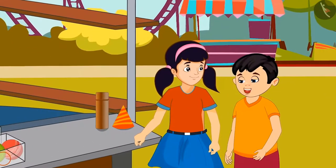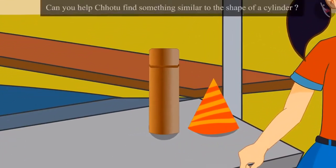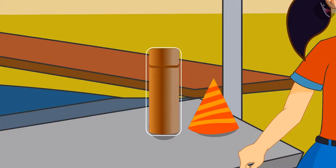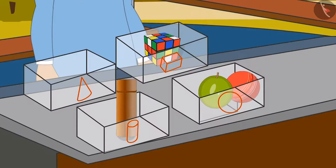And now we have to find something that looks like a cylinder. And I will find this item, Neha. Children, can you help Chotu find something similar to the shape of a cylinder? You thought right, children. This object looks like a cylinder. Chotu put the cylinder-like object in this box.